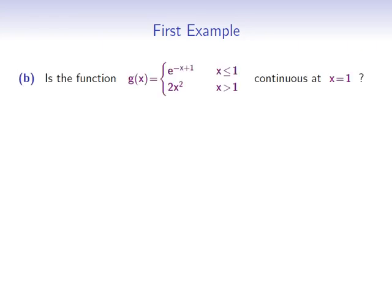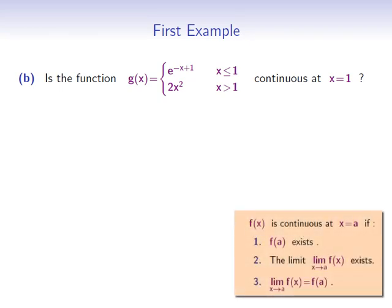Part b: is the function g of x equals e to the negative x plus 1 for x less than or equal to 1, and 2x squared for x greater than 1, continuous at x equals 1? Again, we have to check the three conditions. First, it is clear that g of x is defined for x equals 1. g of 1 will be equal to e to the negative 1 plus 1, which is equal to e to the 0, which is 1. So the first condition holds. Next, we have to check if the limit of g of x as x goes to 1 exists. As g of x is a piecewise defined function, it makes sense to compute the one-sided limits at x equals 1.